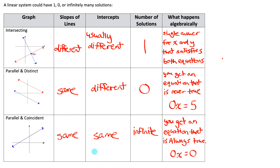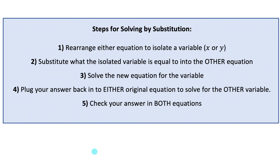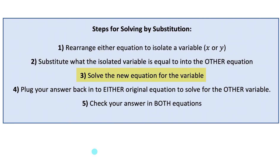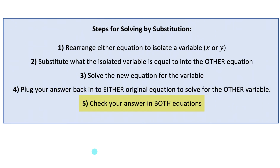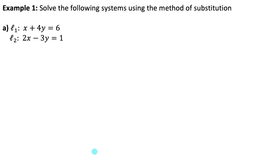So let's go through four examples. Within those four practice examples, we will encounter each of these three scenarios. When using the method of substitution, we follow five steps: rearrange either original equation to isolate a variable — x or y, whichever is easiest; substitute what the isolated variable equals into the other equation; solve the new equation for the remaining variable; plug that answer back into either original equation to solve for the other variable; and always check your answer in both equations.